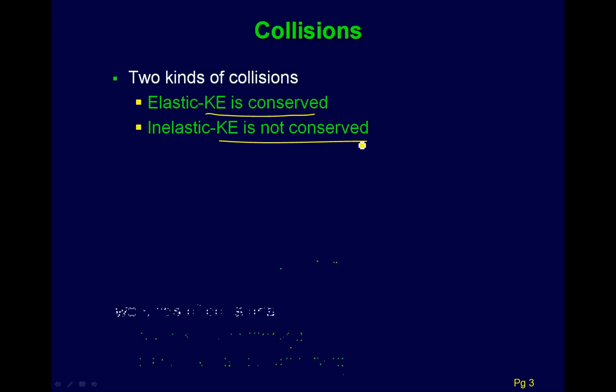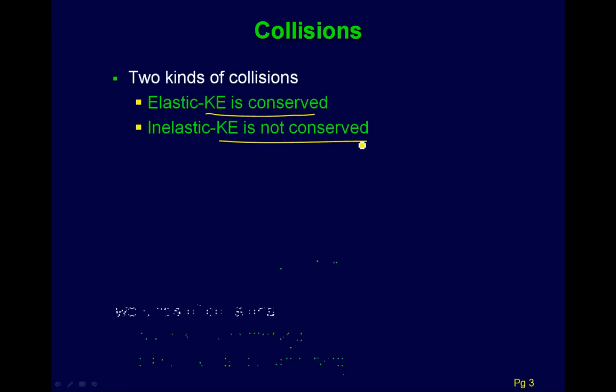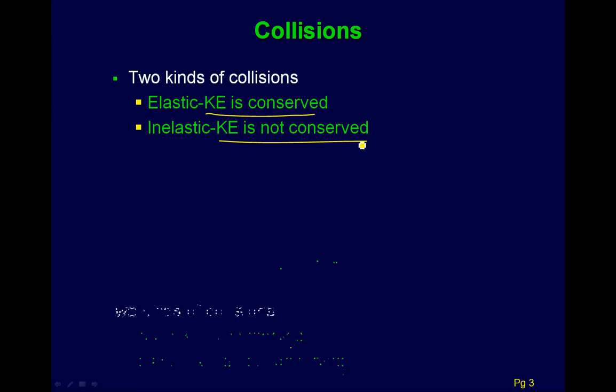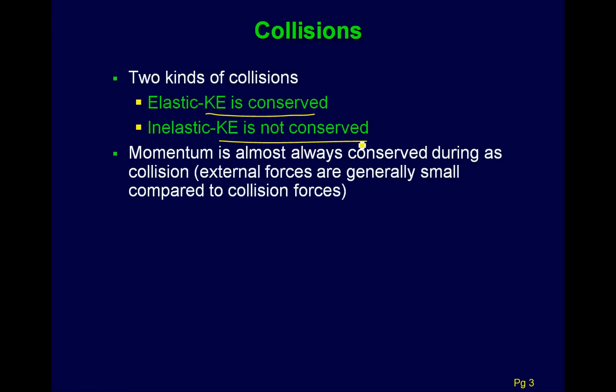One thing you want to be careful about is how we know which type is which. For an elastic collision, you usually have to be told that it's elastic — for example, a problem might say two perfect billiard balls collide. Inelastic collision is generally everything else. And remember, during a collision, momentum is almost always conserved.